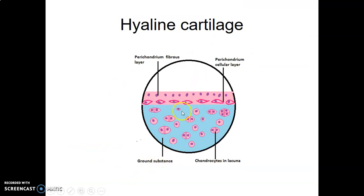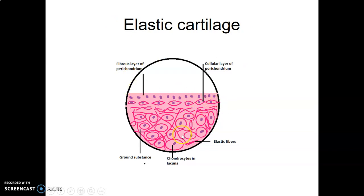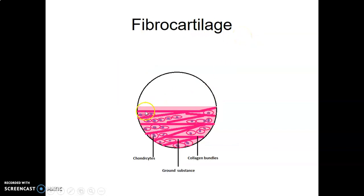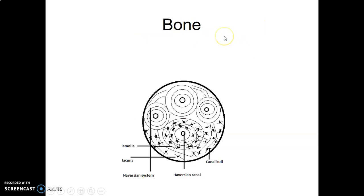In revision: hyaline cartilage has cells in isogenous groups of two to six, clear matrix, collagen not visible, perichondrium present. Elastic cartilage has cells in lacunae (one cell per lacunae), branching and anastomosing fibers visible in ground substance, perichondrium present. Fibrocartilage has thick bundles of collagen type 1 fibers, cells in parallel rows, no perichondrium. Bone (compact) has a Haversian canal with neurovascular structures, concentric lamellations of collagen type 3, osteocytes in lacunae communicating via cytoplasmic extensions in canaliculi, and Haversian canals communicating with neighboring ones at 90 degrees via Volkmann's canal.